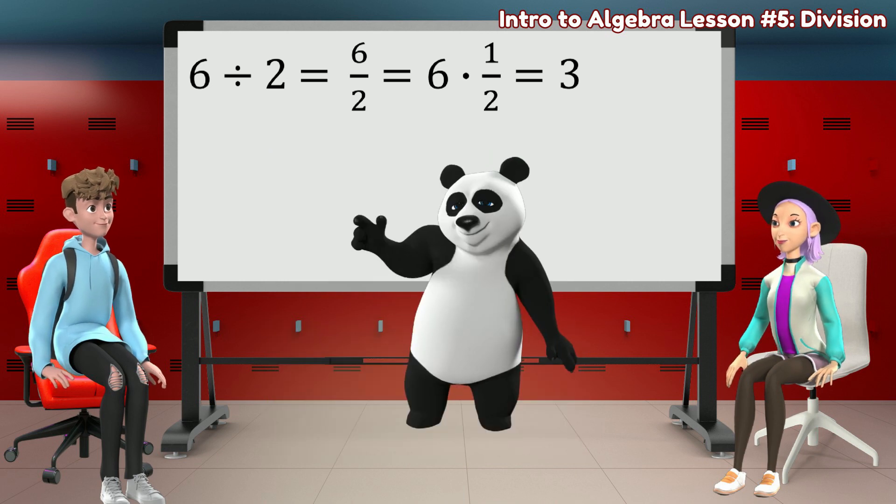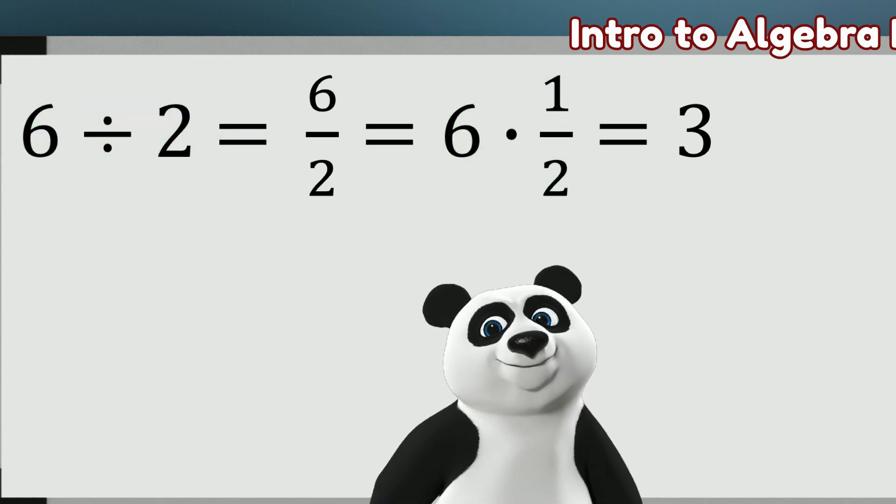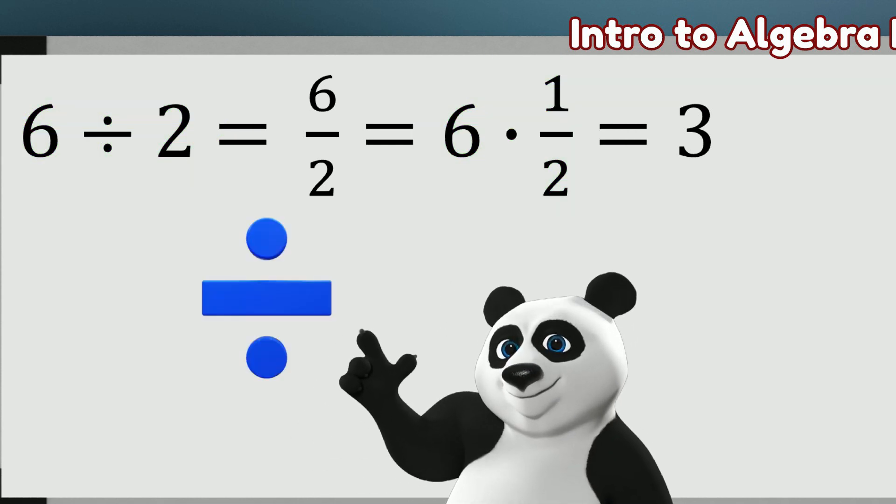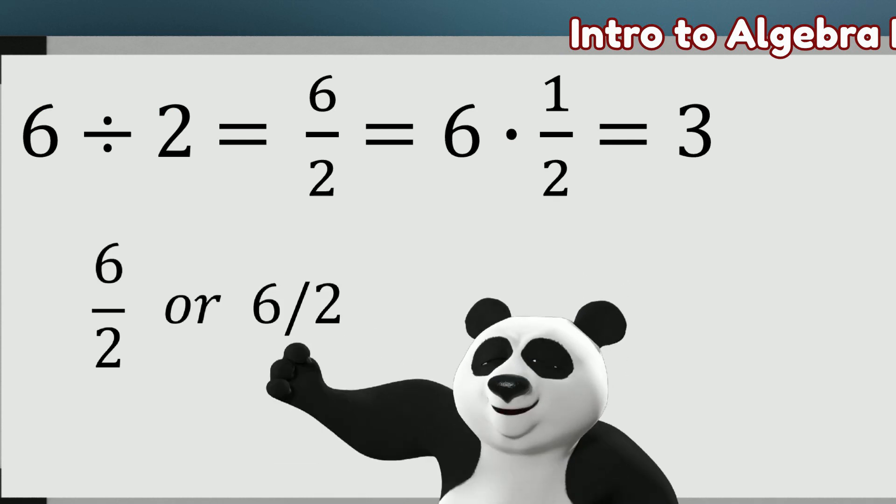From this example, we see that dividing by 2 is the same as multiplying by 1 half. In algebra, we rarely write the division symbol with a short horizontal line with 1 dot above and below. Instead, we use a fraction bar, either horizontal or slanted.